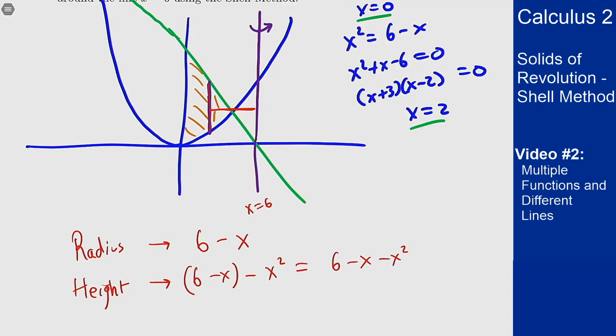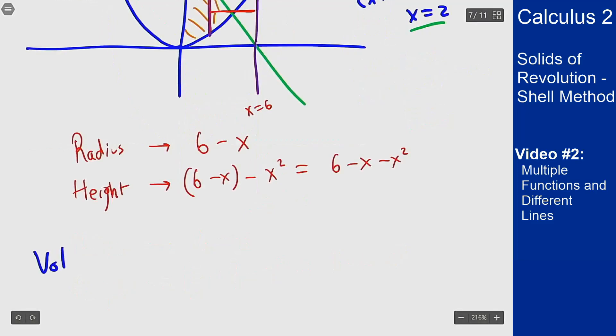But now with radius and height determined, I can then plug into the formula and solve for this answer. Volume should be 2π the integral from 0 to 2, my bounds of integration, the radius times the height. Plug in those two formulas in. Now we can expand, collect terms, and then integrate to solve this out.